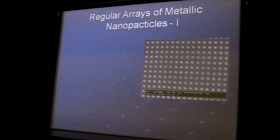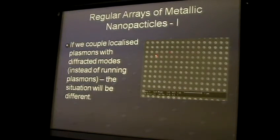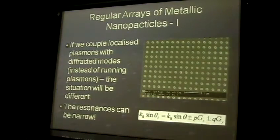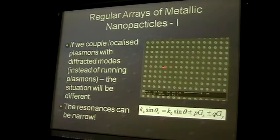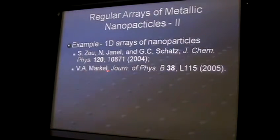If we change the geometry to its inverse - remember the first slide where you put holes inside the gold layer - you instead place dots on a glass substrate. Then you would have localized plasmons in each of the dots. You can try to couple these plasmon resonances by using a diffractive mode. Instead of using running plasmons, where K-SPP was large, we can use diffraction and try to couple the localized plasmons in all these dots. In this case, the resonances can be much, much narrower.